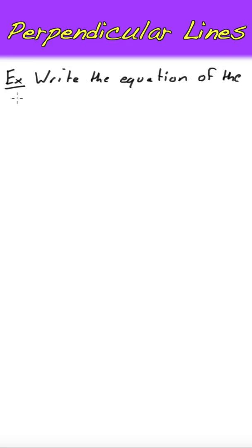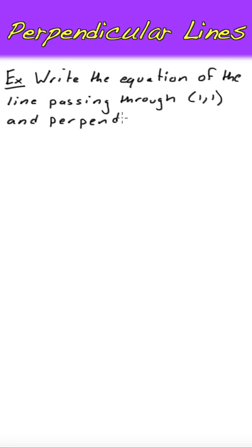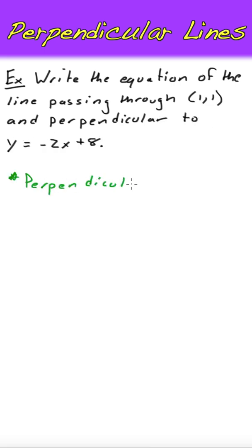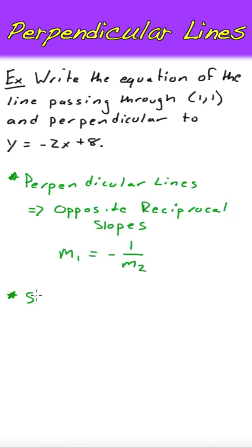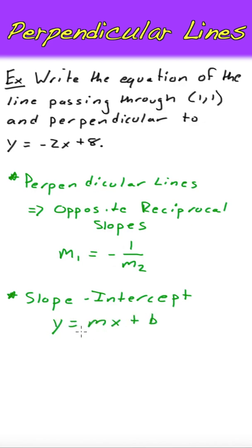Let's write the equation of a line that passes through the point and is perpendicular to the line y is equal to. First, let's note that two perpendicular lines have the opposite reciprocal slopes. Also, the given line is in slope-intercept form, or y is equal to. In this form, slope is given in the equation — it's the coefficient of x. So the slope of the given line is.